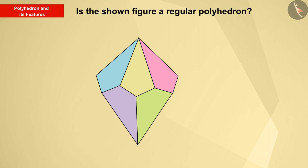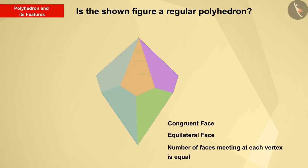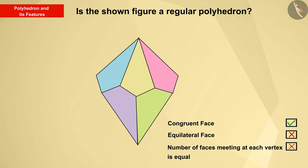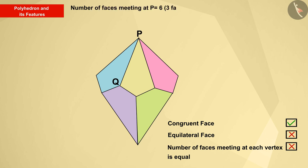As we can see, all the faces of the shape are congruent but not equilateral. Is the number of faces at each vertex equal? No. Let's see how. Number of faces on P equals six, three faces forward and three faces backwards. Number of faces on Q equals three.